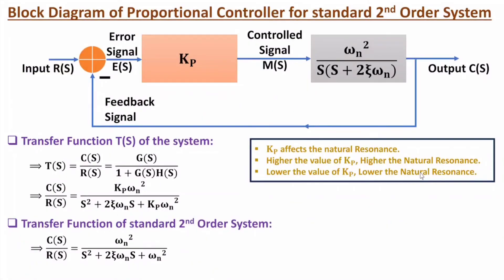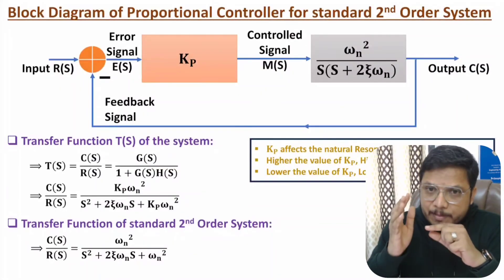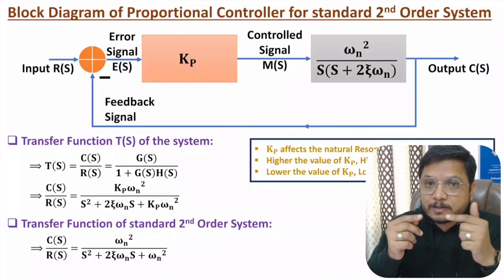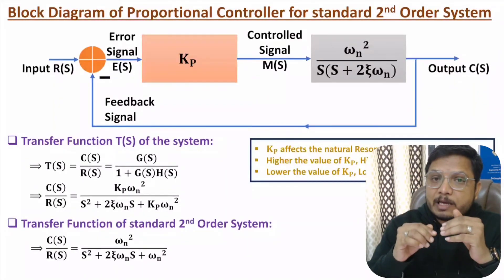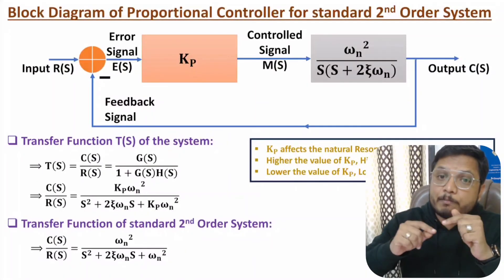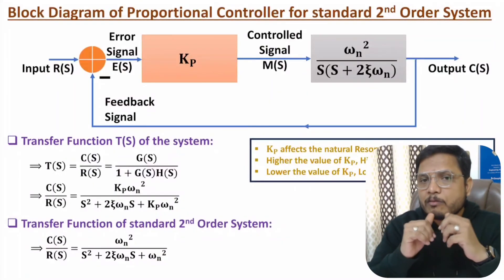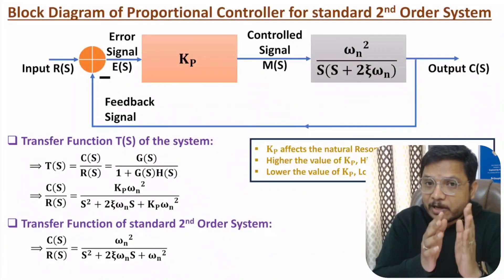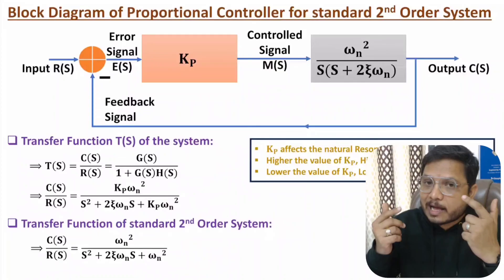One more important thing to note: with a higher value of Kp, you get a faster response, but along with that, peak overshoot will increase and there will be more steady-state error. With a lower value of Kp, peak overshoot will be less and there will be less steady-state error. This means that for a higher value of Kp we have lower stability of the system, and for a lower value of Kp we have higher stability of the system.